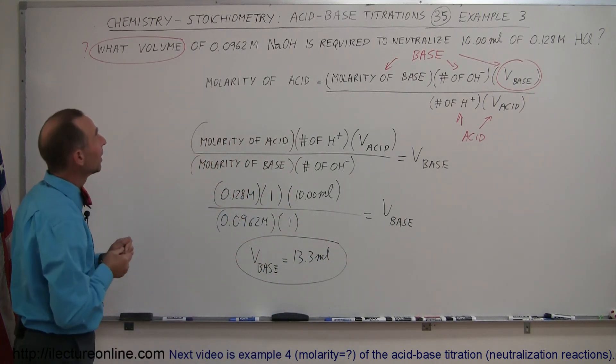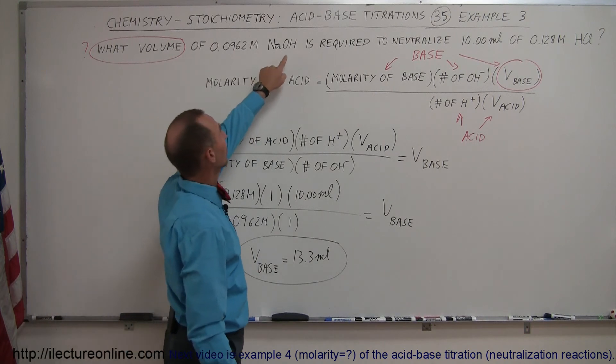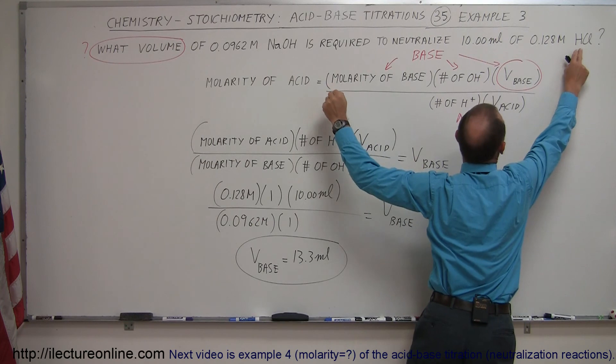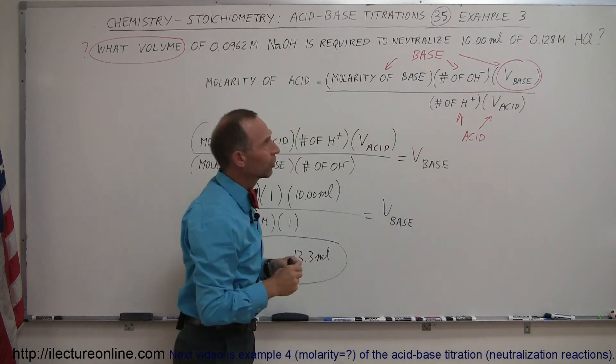Now does that make sense? Well, let's see here. Since the number of hydroxide ions per atom is one and the number of hydrogen ions per hydrochloric acid molecule is one...